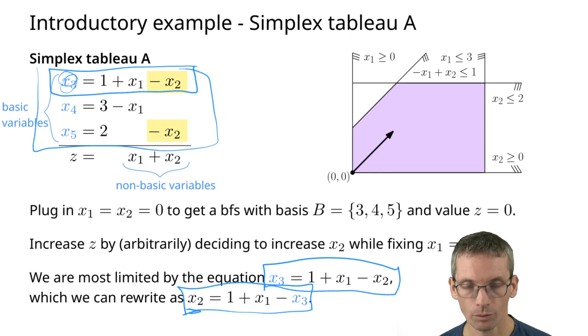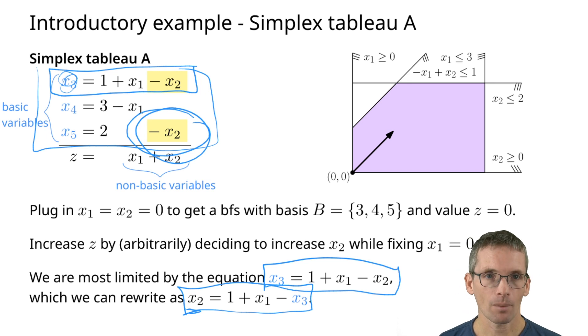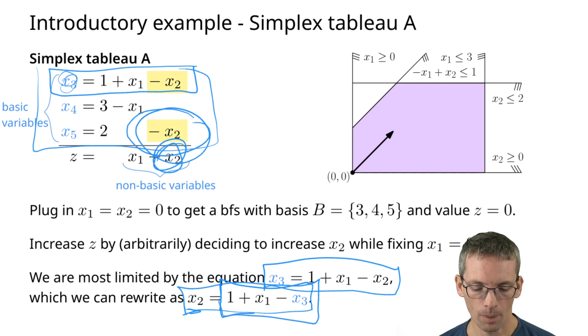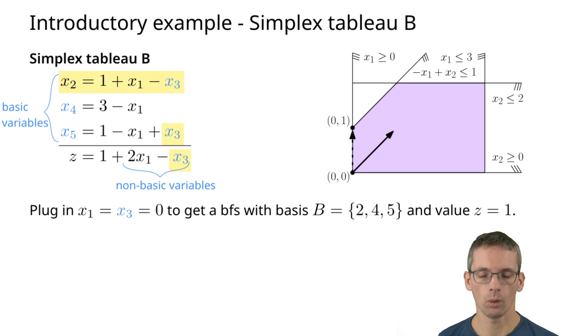We just need to observe that now x2 will be no longer a non-basic variable, but x3 instead. So instead of having minus x2 here, we take minus and then replace this by this term to obtain something in x1 and x3, my new non-basic variables. Likewise here, this x2 I will have to replace by this here. For instance this gives me x1 plus 1 plus x1 minus x3, which is the same as 1 plus 2x1 minus x3. So this is what you see here now.